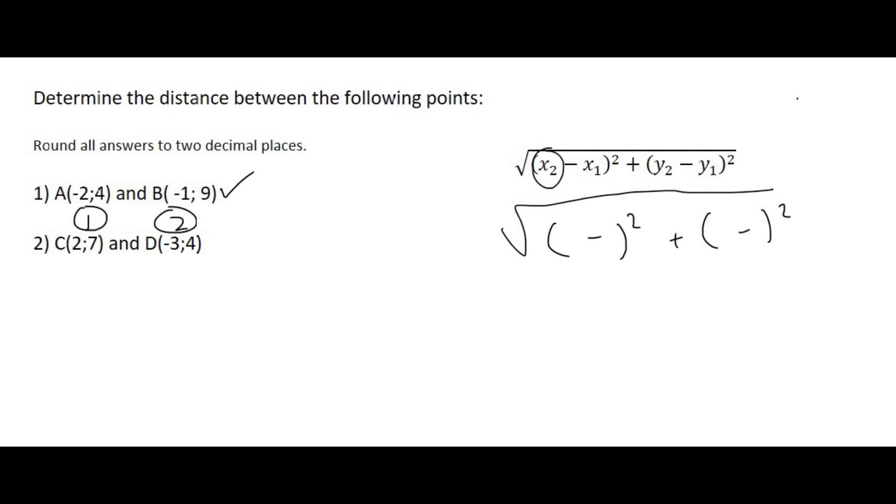So the first part is the x value of point number two. So that's going to be that one over there. Oh no, that's not right. x value of point number two is this one. Because now we've said that D is our point number two. So that's going to be a minus three. Then the formula says I'm going to take the x value of point number one, which is the two over there. So I'll fill in the two.